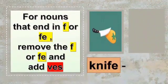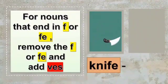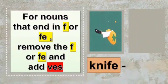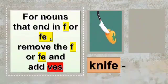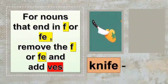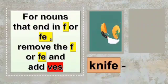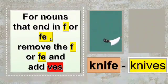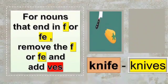Rule 5: some nouns that end with F or FE — we remove F or FE and add VES to make them plural. For example, knife — the spelling ends with FE. When we make it plural, we remove FE and add VES, so it becomes knives.